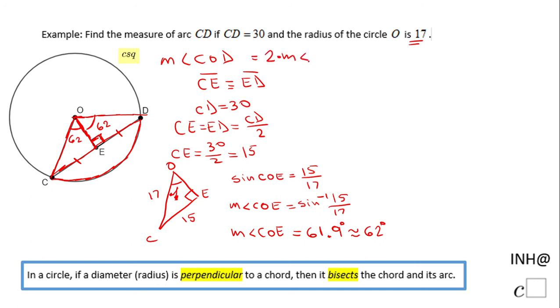So in our case, the measure of angle COD is 2 times 62, so that will be 124. And as I said, the measure of the central angle COD would be the same as the measure of arc CD. So the measure of arc CD is 124 degrees.